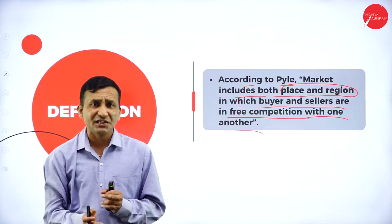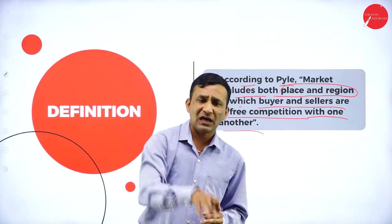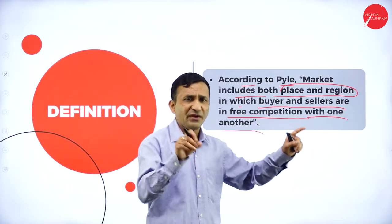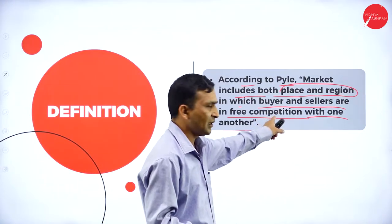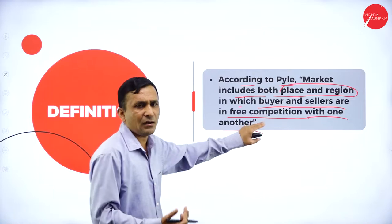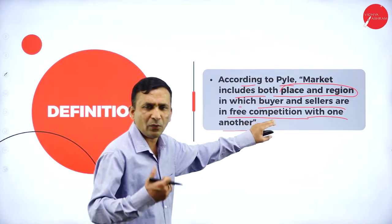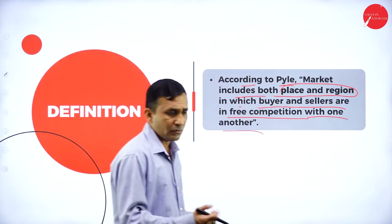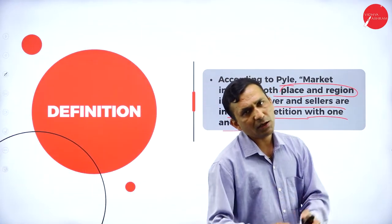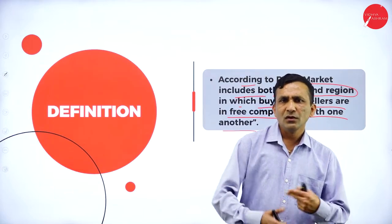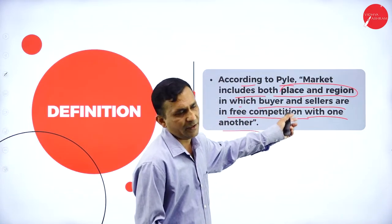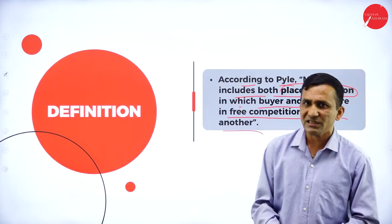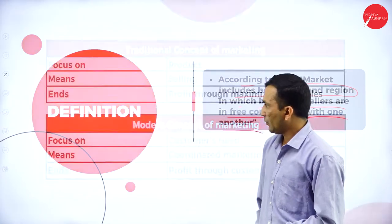The place and region where buyers and sellers are in free competition with one another — nobody is restricting buyers or sellers. It is a free competition. As a businessman, they provide products or services freely. The buyer and seller meeting at one specific place is called a market.